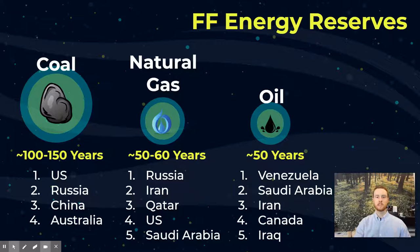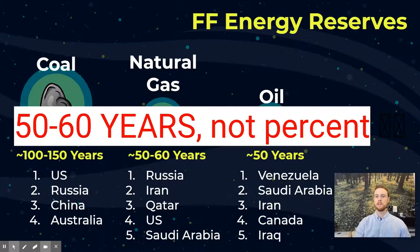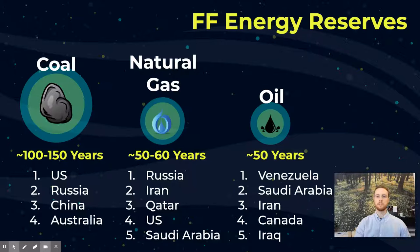Next, we have natural gas. Natural gas is estimated to remain for about 50 to 60 years at the current rate of consumption — that's how much natural gas is left on earth if we continue consuming it at the current rate. And finally, we have oil, which is at about 50 years remaining. Now these estimates are just that — they're estimates, and they're subject to change as we explore and expand new areas of extracting these fossil fuel resources.